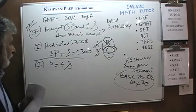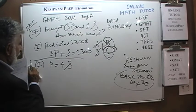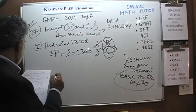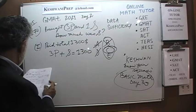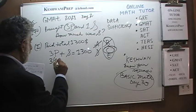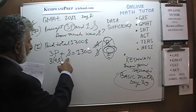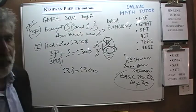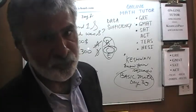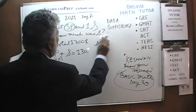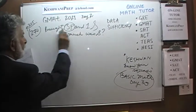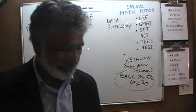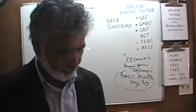Just for illustration: substitute P equals 4S into 3P plus S equals 1300: 12S plus S equals 13S equals 1300, so each scanner costs $100. But that calculation was a waste of precious seconds — we didn't need to do it.